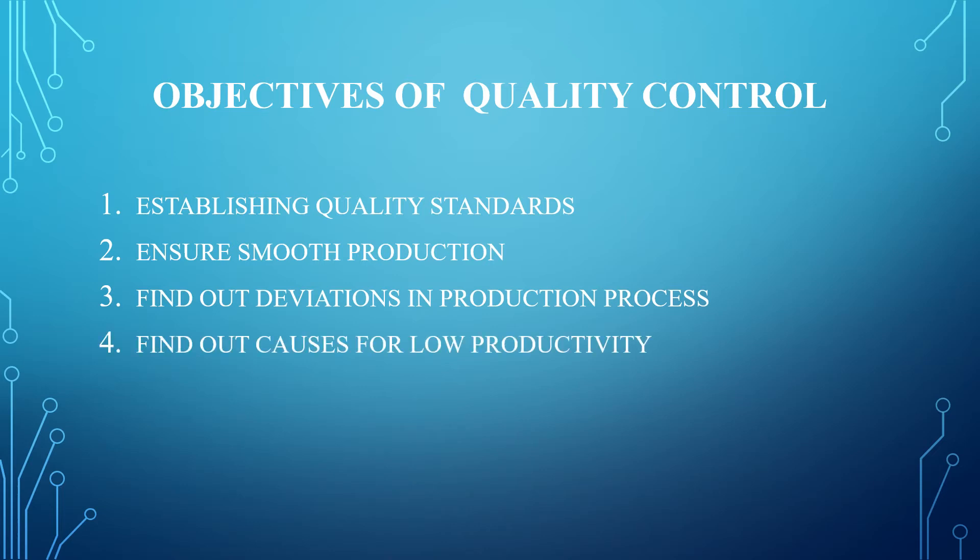The fourth objective is to find out causes for low productivity. There are many causes in a manufacturing process that lead to low productivity or reduced quality. The reasons for low productivity can be defective quality of raw material, defective machinery, defective control system, etc. Once these causes of low productivity or low quality are identified, immediately a corrective measure has to be taken.